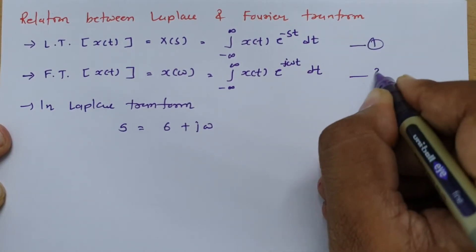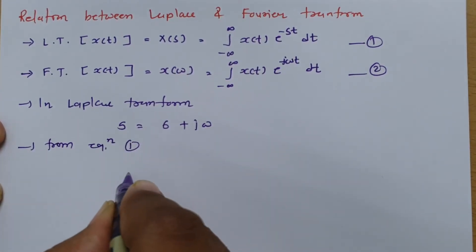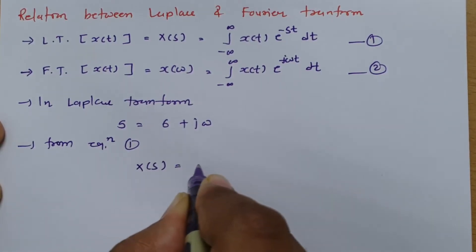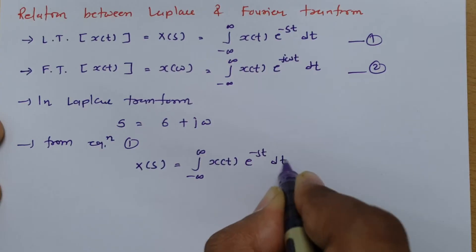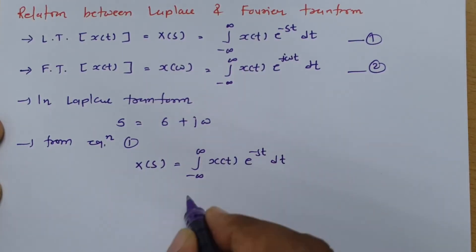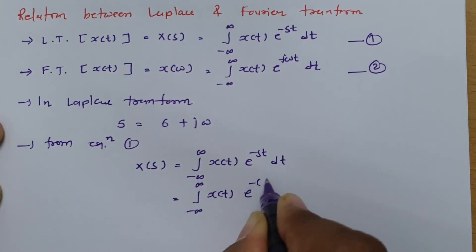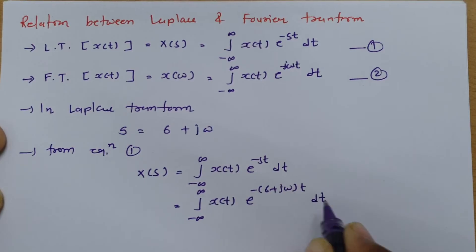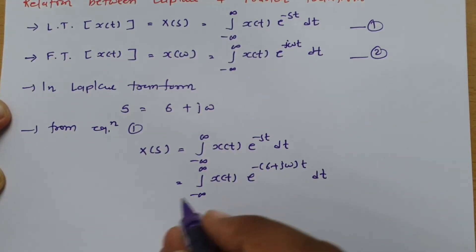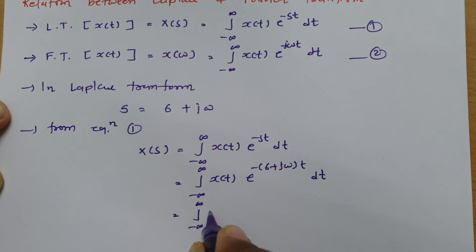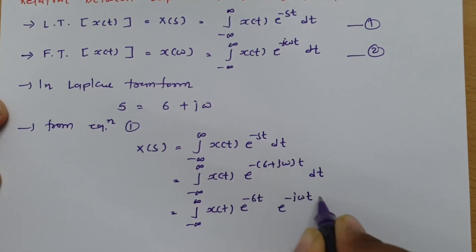Calling the Laplace definition equation 1 and s = σ + jω equation 2, substituting equation 2 into equation 1 gives X(s) = integral from minus infinity to infinity of x(t) times e to the power minus (σ + jω)t, dt. This can be separated into e to the power minus σt times e to the power minus jωt, dt.